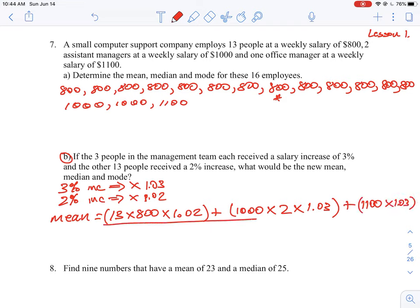Okay, so we could take that, write an expression for that for the top, and then divide it by 13 plus 2 plus 1. Okay, and when you work that out, you should see that your mean changes a little bit, but it will be 862.56. So that would be our new mean where we have a 3% increase.